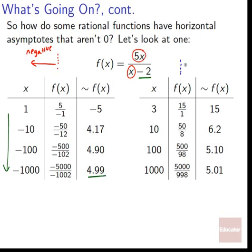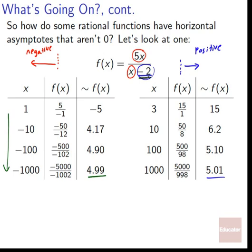The same thing happens on the positive side. At x equals 3, we're at 15; at 10, we're at 50 over 8; at 100, we're at 500 over 98; at 1,000, we're at 5,000 over 998. The negative 2 becomes less and less meaningful and the function eventually approaches 5 times a number divided by a number. We'll never touch 5 because we'll always be slightly off by this factor of minus 2, but we'll get arbitrarily close — to values like 5.00001.